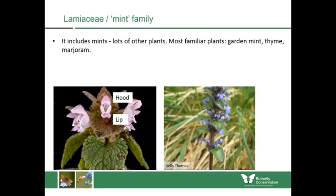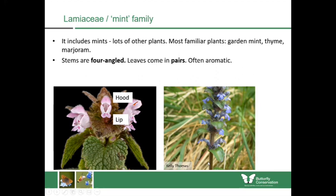The Lamiaceae or mint family includes mint, thyme, marjoram and lots of wildflowers. An easy identification feature is that the stems are four-angled — quite square — and the leaves come in pairs, meaning leaves directly opposite one another. You can see this on the bugle photograph on the right where you can feel the four angles on the stem. The flowers themselves have a certain structure with a hood at the top and a lower lip.